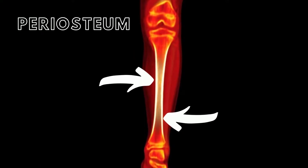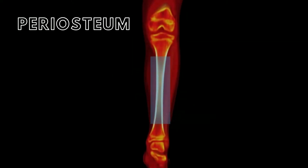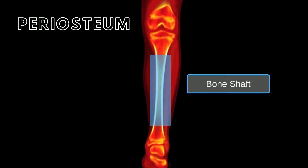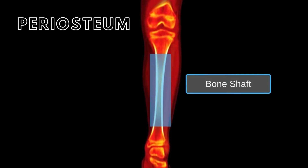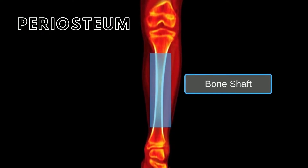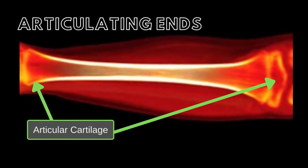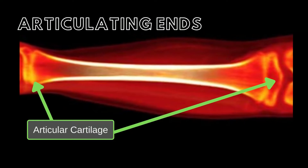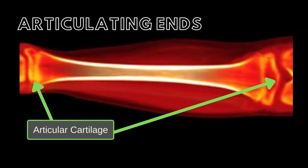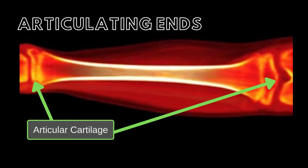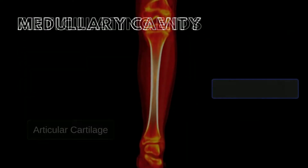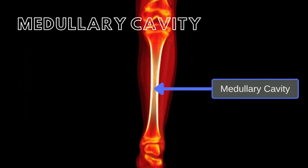An important thing to remember is that the periosteum only covers the shaft of the bone. The articulating ends are covered with an articular cartilage, which is composed of hyaline cartilage. The medullary cavity runs through the shaft of the bone and is where the marrow is housed.